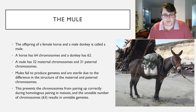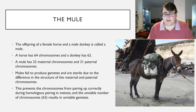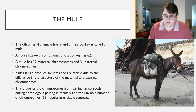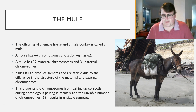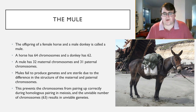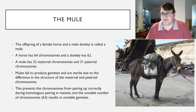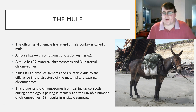The mule is the perfect example of this. The offspring of a female horse and a male donkey is called a mule. A horse has 64 chromosomes and a donkey has 62. The mule gets 32 chromosomes from its mother and 31 from its father, giving it 63 chromosomes total. How can homologous pairing work with 63 chromosomes? It can't — so the mule can't produce gametes, making it sterile.